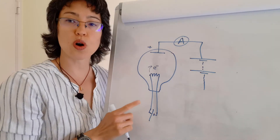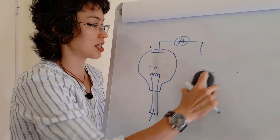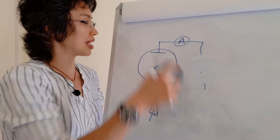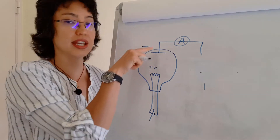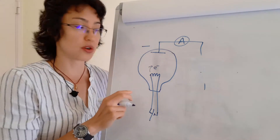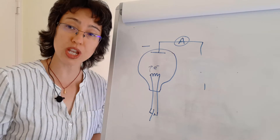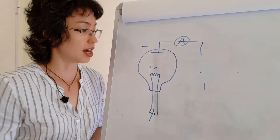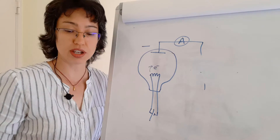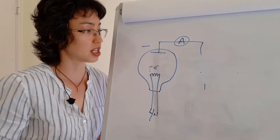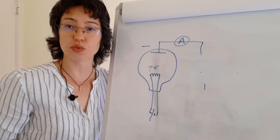We know this is a one-way device because if we were to wire it up the other way and make that plate negative, then no current would flow. This is essentially how the first diodes were made — thermionic diodes. These looked like light bulbs, like valves, tubes, vacuum tubes. This is how the first diodes worked.